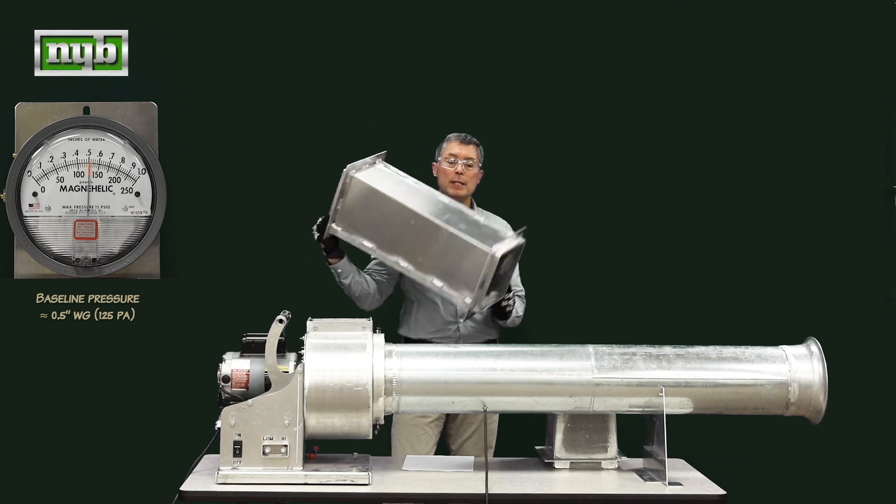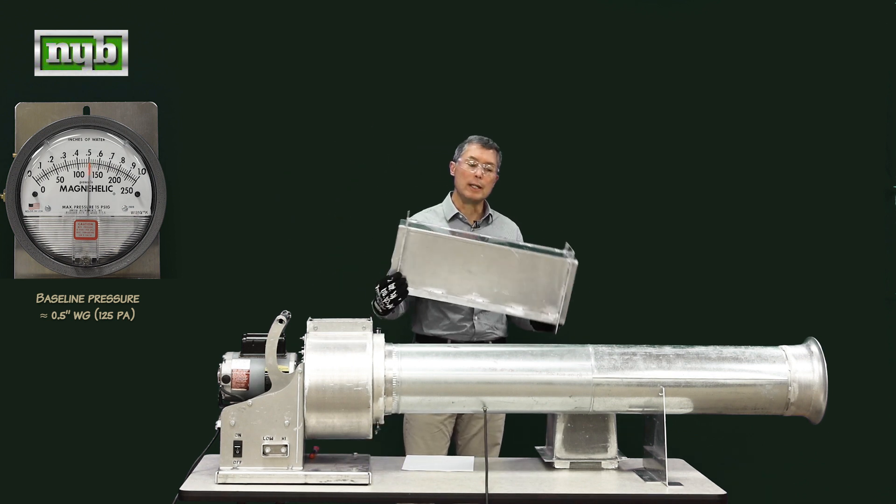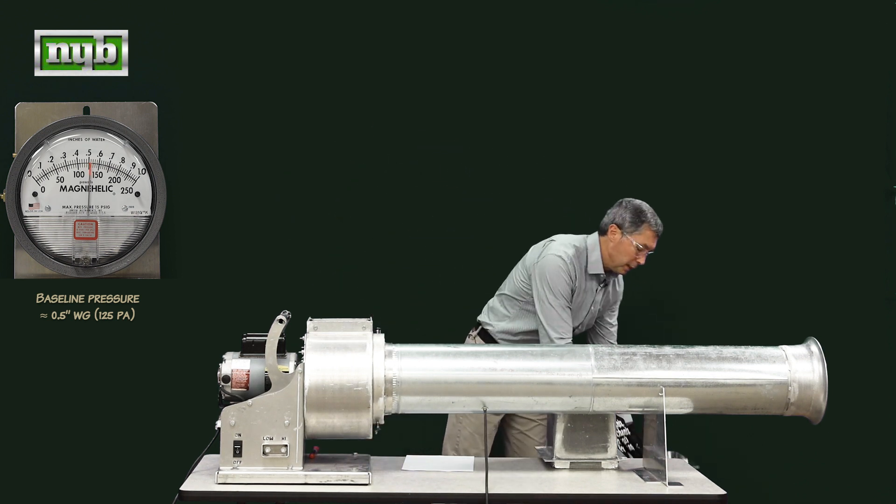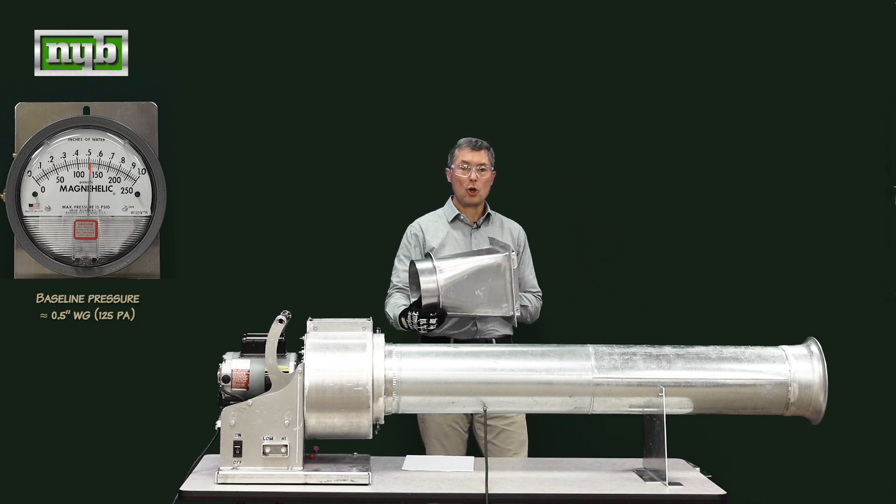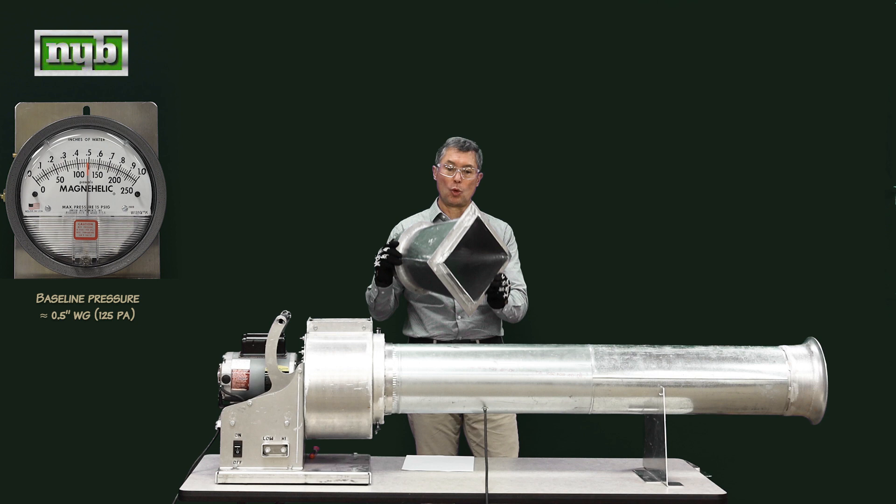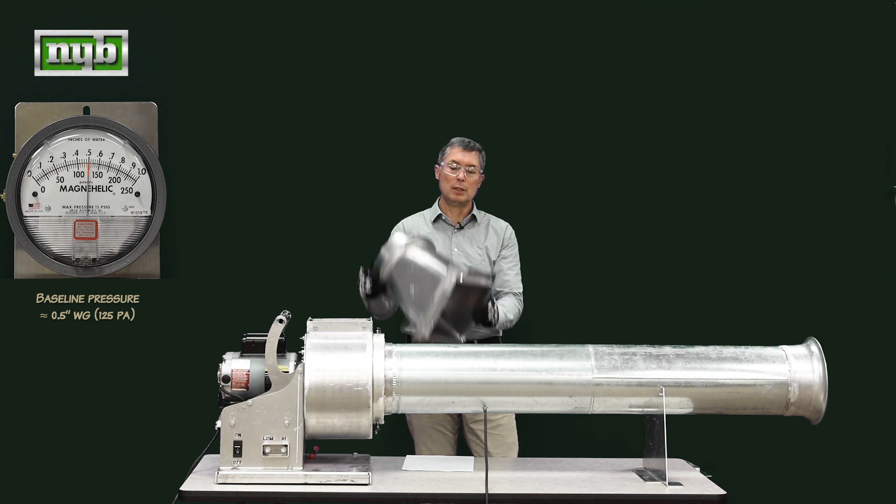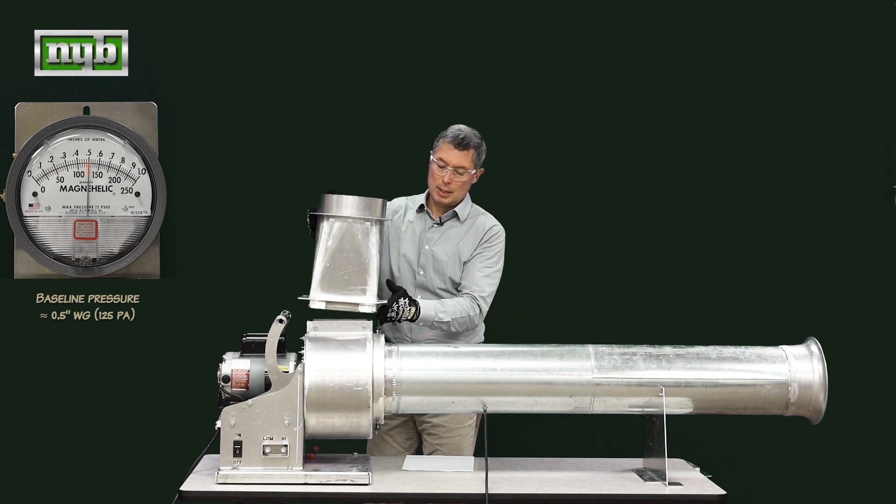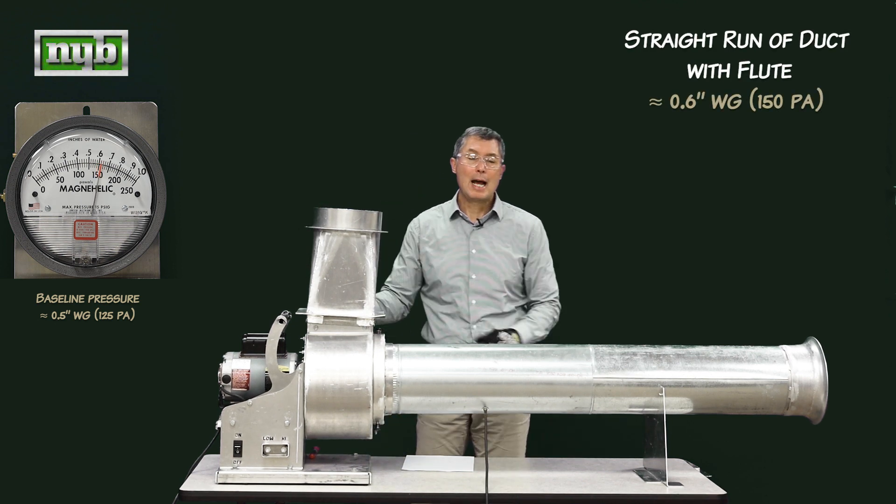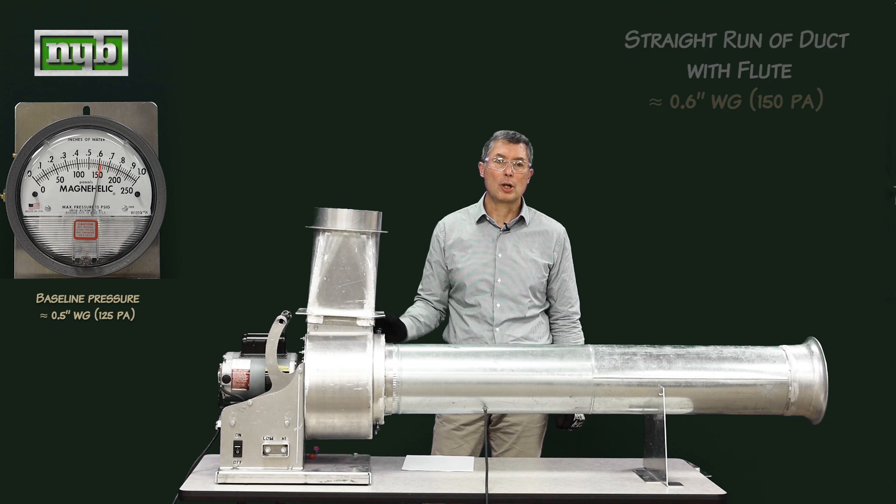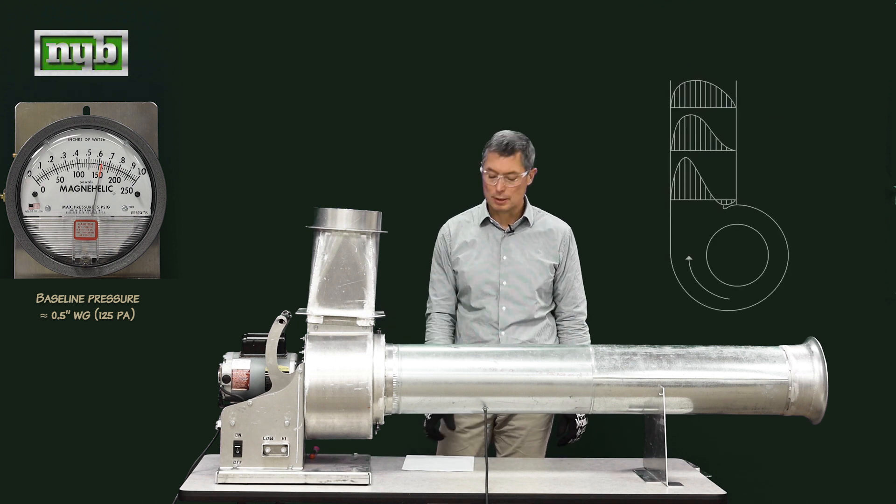Now you need a piece of ductwork but how long do you need it? Well even a short piece of ductwork you're going to get some regain and we can show that by utilizing the smaller shorter rectangular round transition, put it on the fan outlet and we can see our velocity pressure went up. Not quite as much as it did with the straight run of ductwork but it still went up pretty sizably.